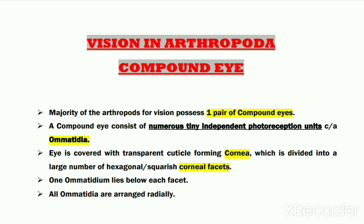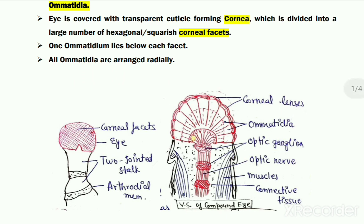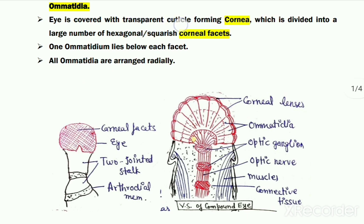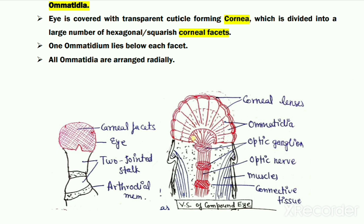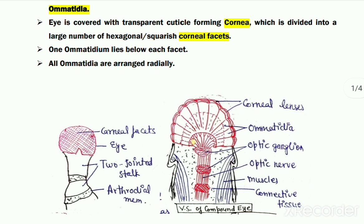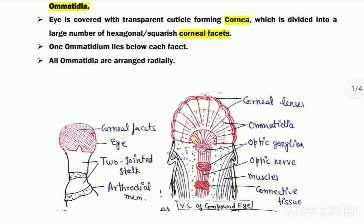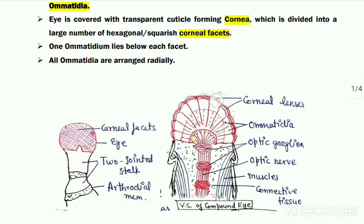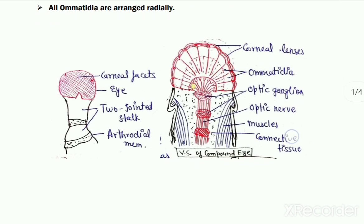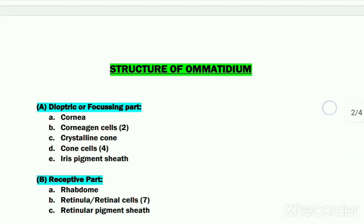Each ommatidium is capable of forming an independent or separate image. Externally, the compound eye is covered by a transparent cuticle which forms its cornea, and the cornea is further divided into numerous squarish or hexagonal parts termed corneal facets or corneal lenses. One corneal facet corresponds to one ommatidium. In a sagittal section diagram, beneath one corneal lens is present one ommatidium, and numerous such ommatidia are arranged radially within one compound eye.